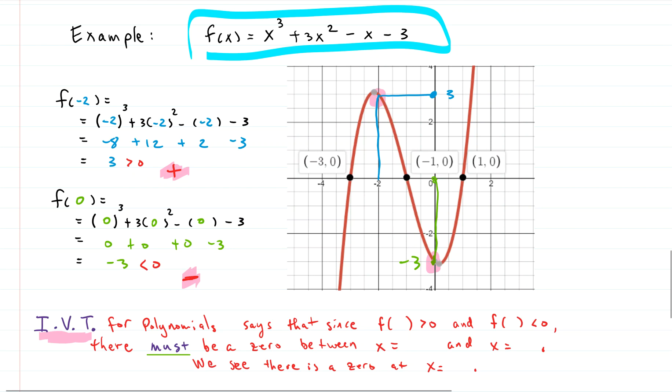We went from positive to negative. So the intermediate value theorem for polynomials says that since f of negative 2 was positive, and f of zero was negative, there must be a zero between x equals negative 2 and x equals zero. And we can see it, right? We can see there's a zero at x equals negative 1. That's it. That's the intermediate value theorem for polynomials.